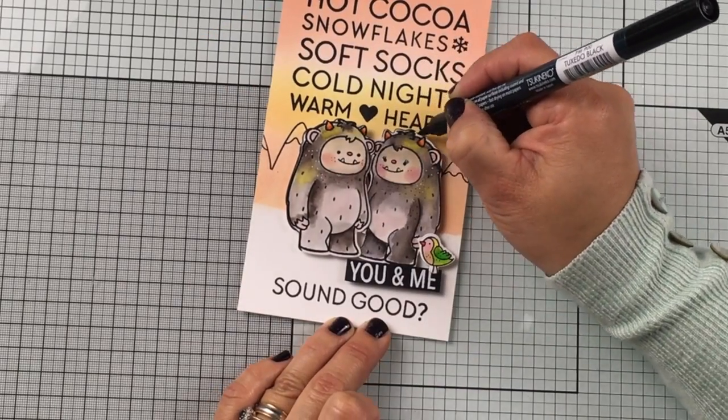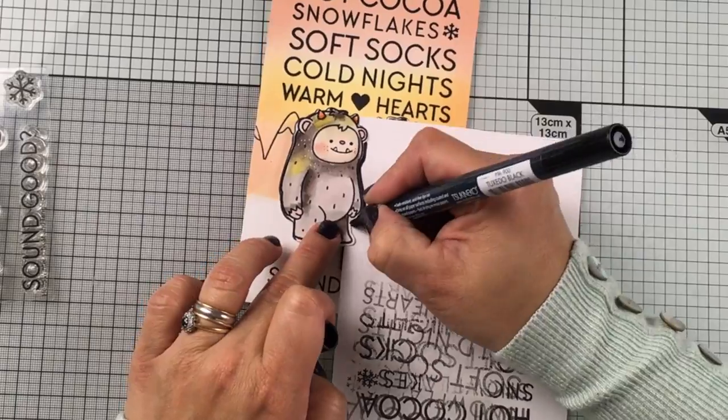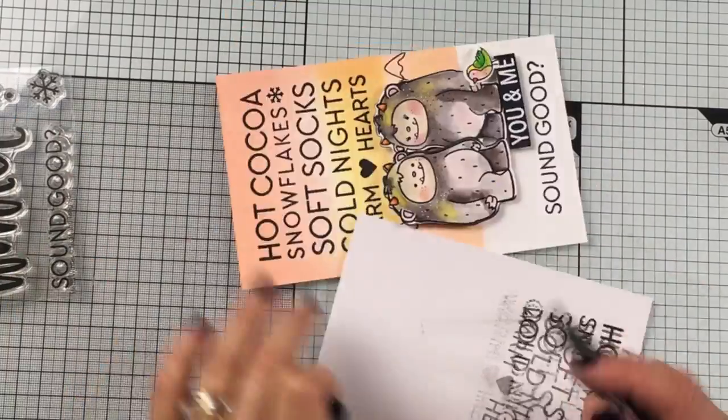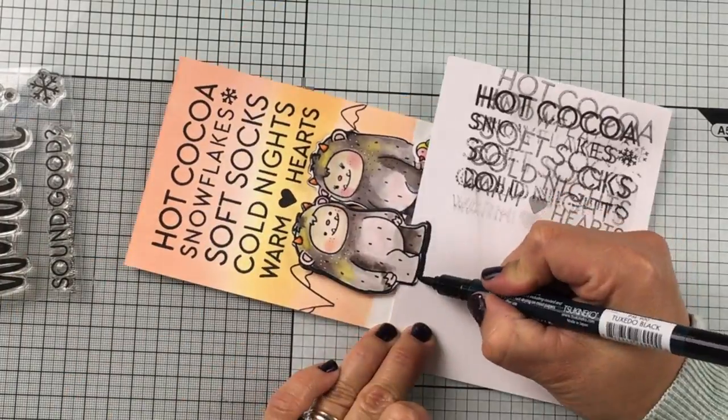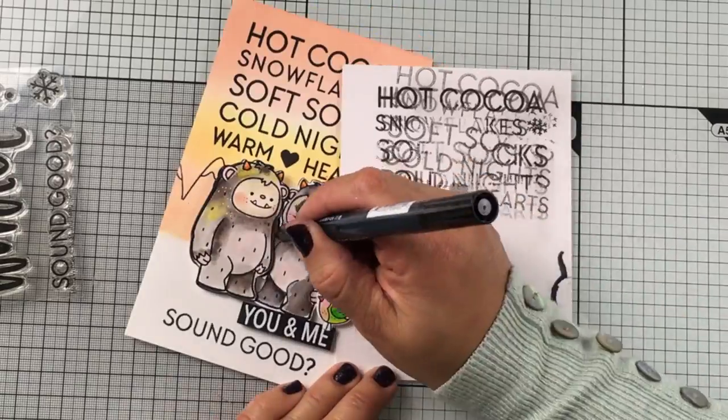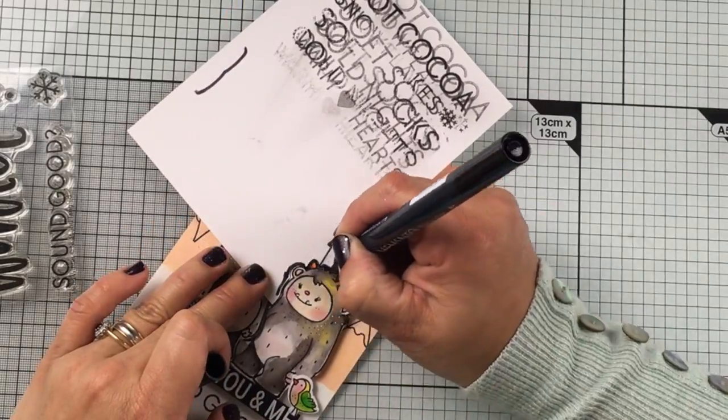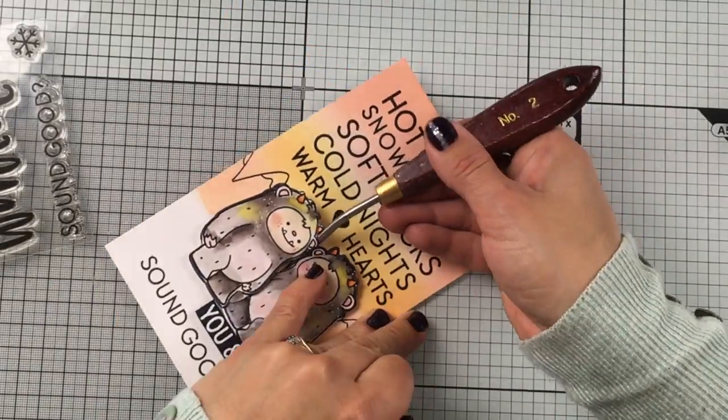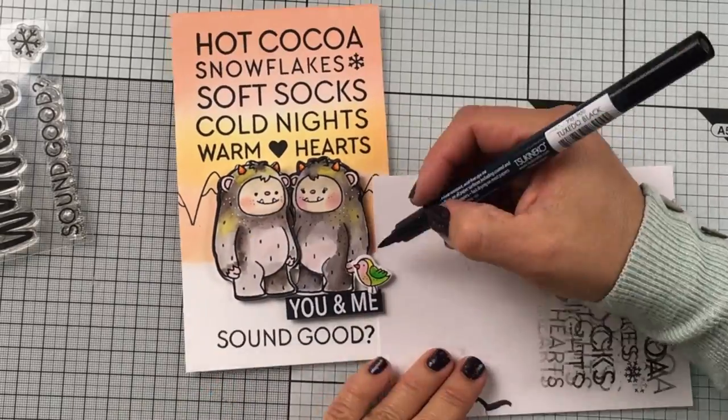So now I'm going to add a dark edge to the die cuts. I normally do this before sticking them down but I forgot because I was so excited here talking.